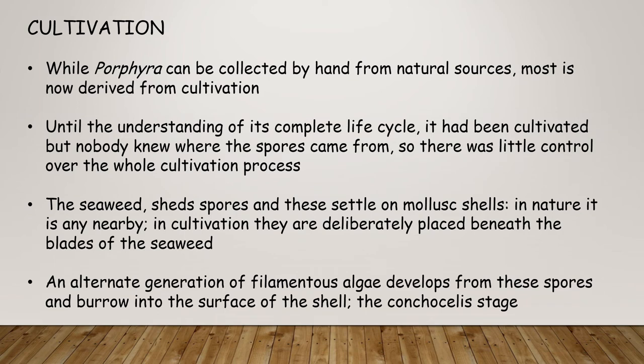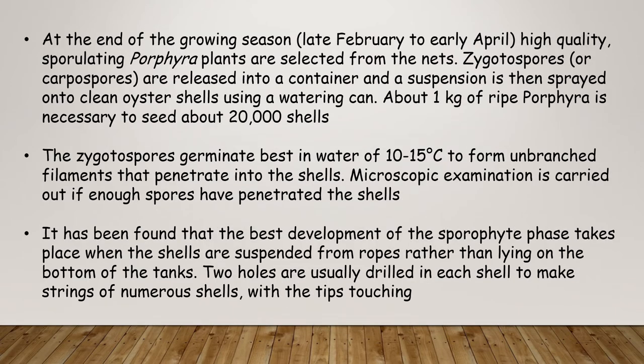While Porphyra can be collected by hand from natural sources, most is now derived from cultivation. Until the understanding of its complete life cycle, it had been cultivated but nobody knew where the spores came from, so there was little control over the whole cultivation process. The seaweed sheds spores and these settle on mollusk shells in nature. In cultivation, they are deliberately placed beneath the blades of seaweed. In alternation of generations, filamentous algae develop from these spores and burrow into the surface of the shell to form the conchocelis stage.